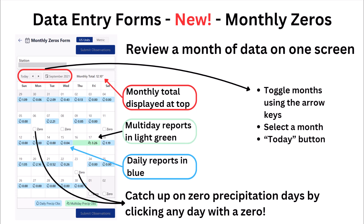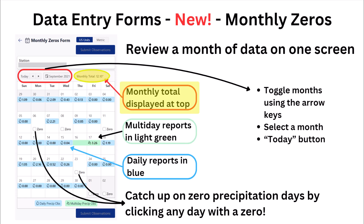Finally, upon popular request, we have added the monthly zeros form to the app. Here you can review your history in a calendar format while also checking boxes to submit zeros for mornings where you want to report no rainfall. Also new, your monthly total is displayed in the space at the top of the calendar.